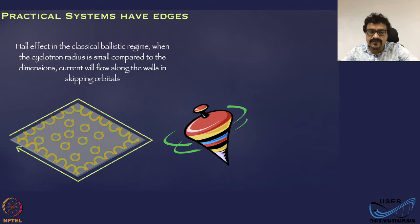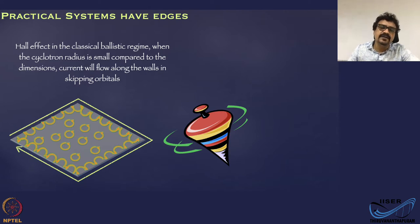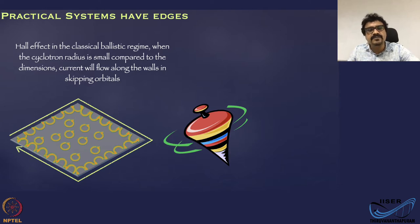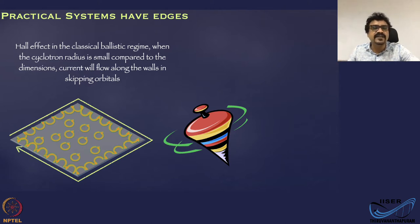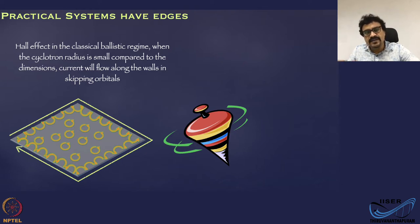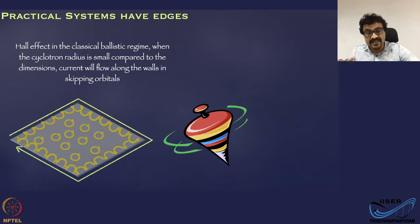So far, we have been discussing the quantization of electron orbits in a two-dimensional system, but we never considered one aspect of practical systems: these systems are not infinite in dimension in the plane, but there are edges. These are systems with finite dimensions, finite width and finite length. When you consider a system with finite dimensions, classically you can arrive at an interesting situation in the classical ballistic regime — the situation where you have edges, or edge states, or skipping orbitals.